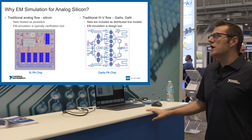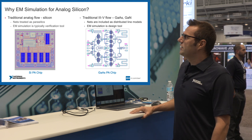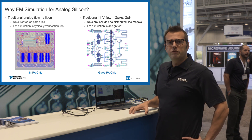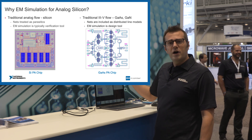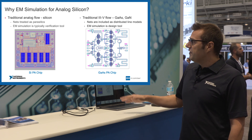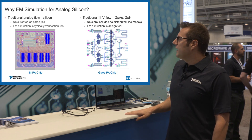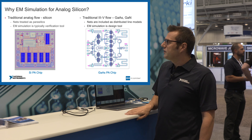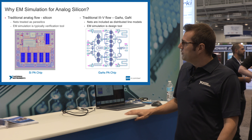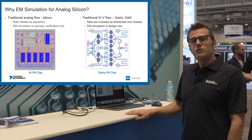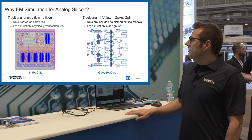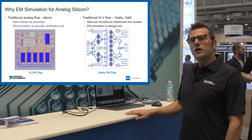So why should we use EM simulation for analog silicon design? In traditional gallium arsenide and gallium nitride MMIC design, you typically have a very low device count, and the nets between the different components and transistors are very well simulated with distributed line models as well as with EM simulation. We can say the nets are part of the design flow.